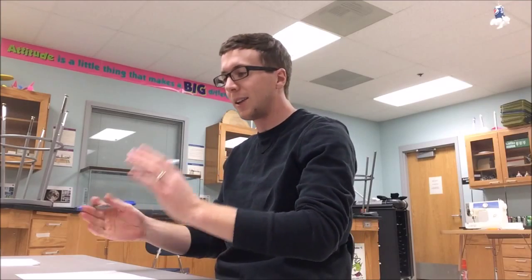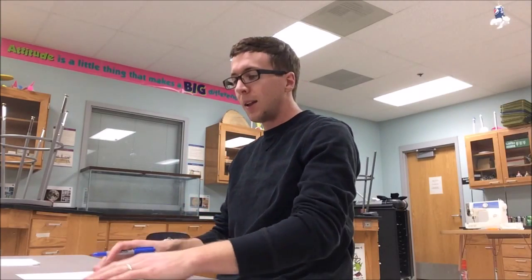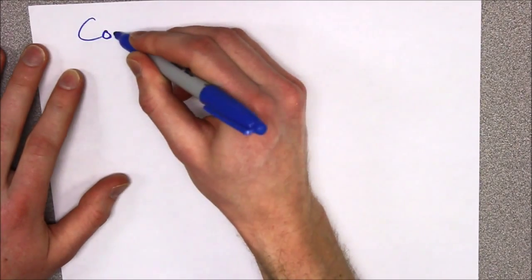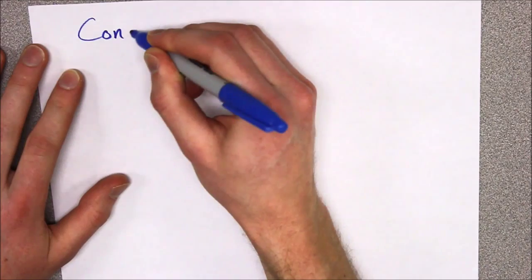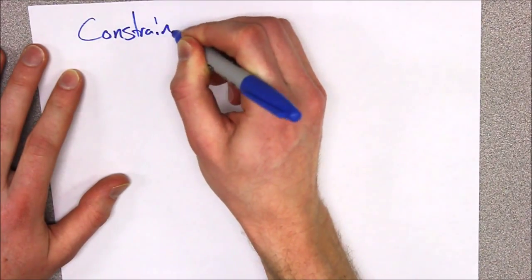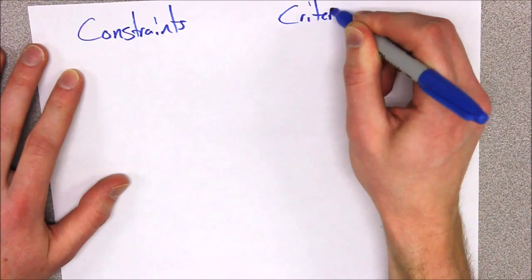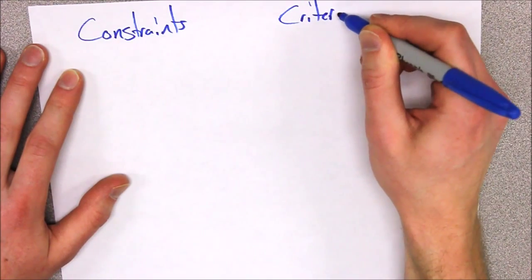Hello everyone and welcome to the video. We are going to talk about the Toothpick Bridge project that we're doing in sixth grade. There are two things that we're going to concern ourselves with, and those two things are constraints and criteria.